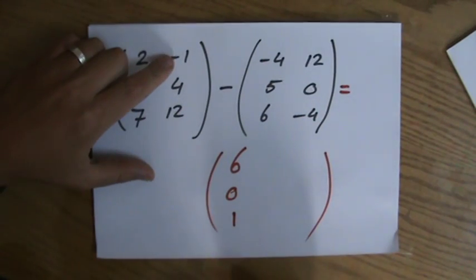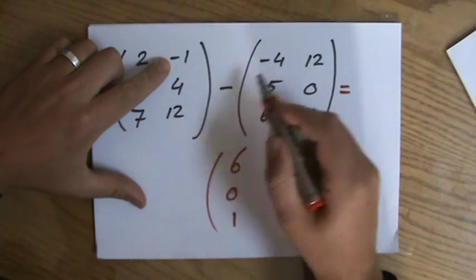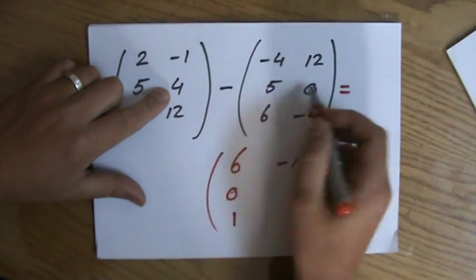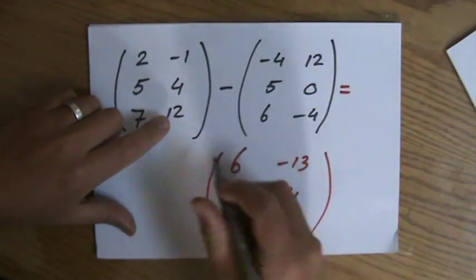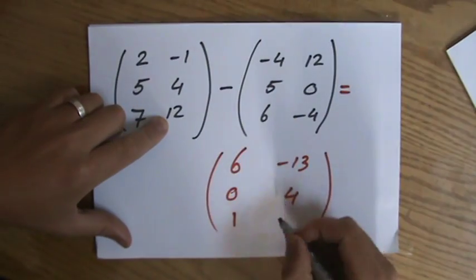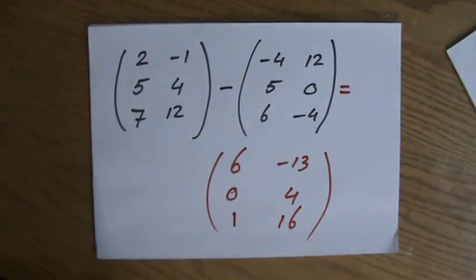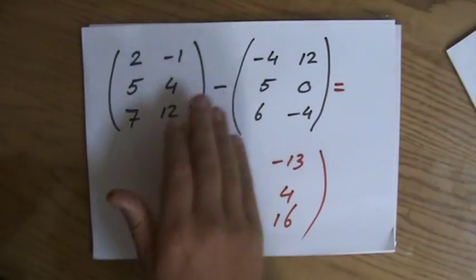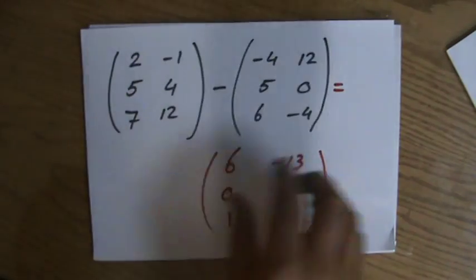5 minus 5 is 0, 7 minus 6 is 1. Next column: minus 1 minus 12 is minus 13, 4 minus 0 is 4, and 12 minus minus 4 is 16. So that's the answer for subtracting matrix B from matrix A.